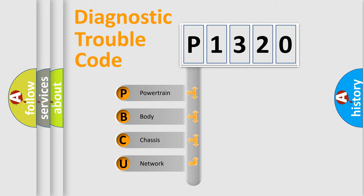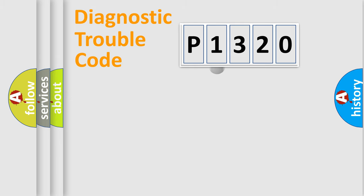We divide the electric system of automobile into the four basic units: Powertrain, Body, Chassis, Network. This distribution is defined in the first character code.